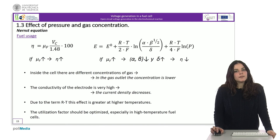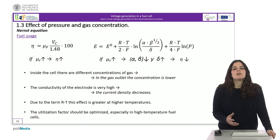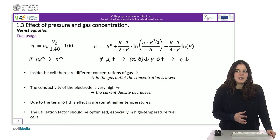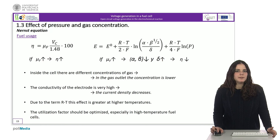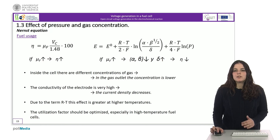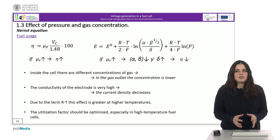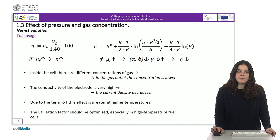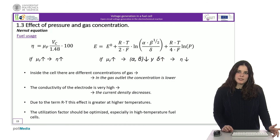In other words, the utilization factor must be a compromise between these two effects. Besides that, in a cell the gas concentration at the entrance is higher than at the exit because fuel has been consumed on the way. As the conductivity of the electrodes inside the cell is assumed to be very high, this has the effect of decreasing the overall current density generated by the cell. The concentration term is directly dependent on temperature, so its effects are more important in high temperature fuel cells. Therefore, the utilization factor should be optimized, especially in high temperature fuel cells, with the most common value for this factor being 80% for this type of fuel cell.